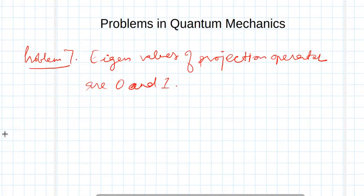So now in this lecture, I am going to solve another problem. The problem is regarding projection operators. We have to show that eigenvalues of a projection operator are either 0 or 1. So let us first of all talk about projection.